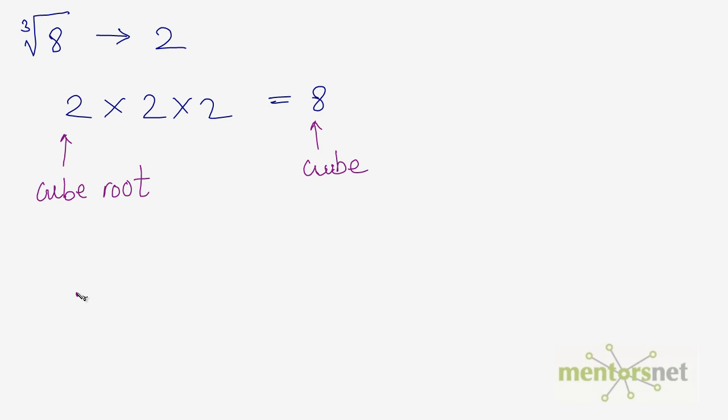Unlike square roots, you can take the cube root of negative numbers and it comes out as a real number. So the cube root of minus 8 is what is the number that when multiplied by itself thrice gives you minus 8.